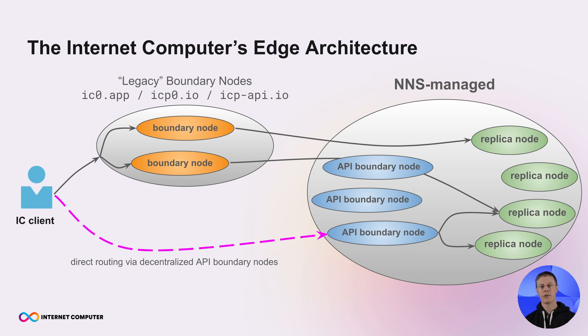Now with the API boundary nodes, this is a little bit different. Each API boundary node is operated by a different node provider. It has its own domain name. And so you need to first, if you want to interact with them, you need to first discover them. So find where they are, what are their domain names. And then you need to somehow decide to which of those API boundary nodes you will send your request.